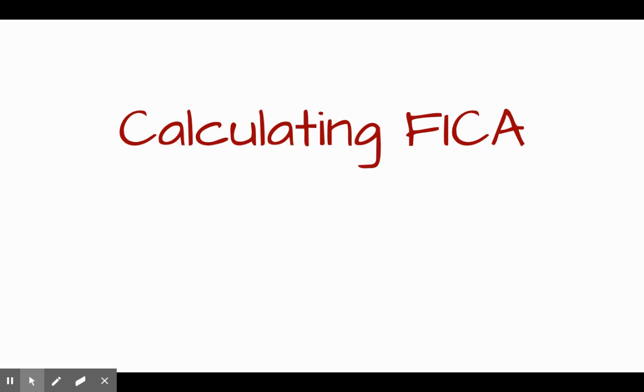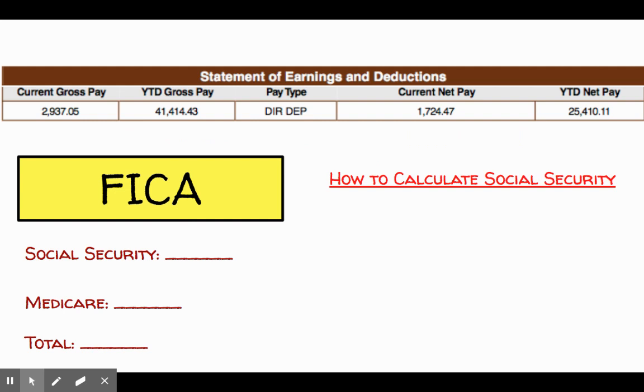So we're going to show how to calculate your FICA tax. I do want to note this is not going to be an exact or precise number — it's going to be accurate enough for our class, a good idea, but by no means exact. Here's a pay stub. We have current pay, year to date, and net pay — that's the number that will actually show up in your bank account — and your year to date net pay.